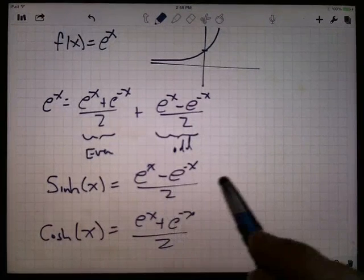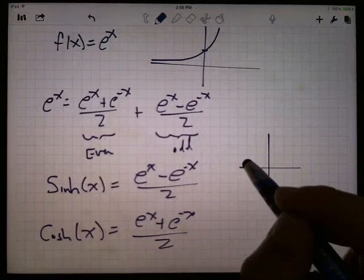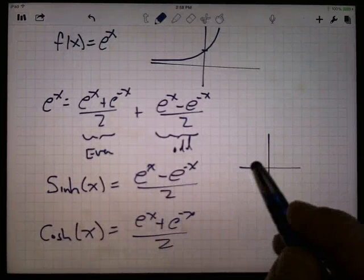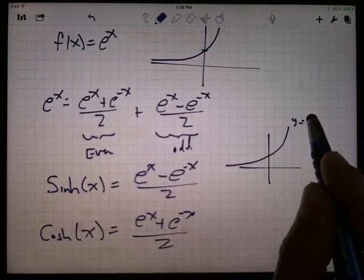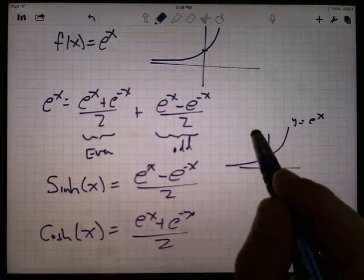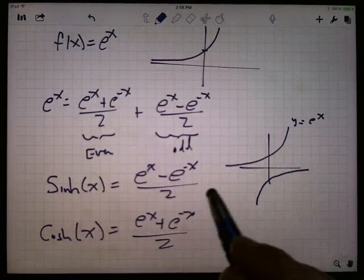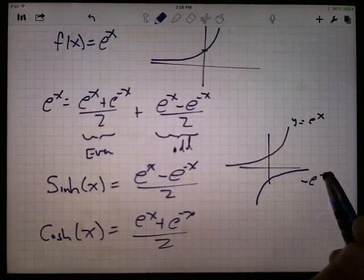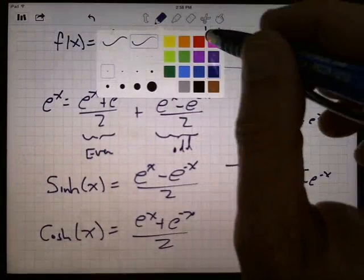If I look at the graphs of these things, e to the x over 2 looks like, how do I want to think of this? Look at e to the x going this way. And look at minus e to the minus x. So e to the minus x going that way. So minus e to the minus x looks like that. And what I'm doing is I'm taking the average. This is minus e to the minus x. So I'm taking the average of those two.